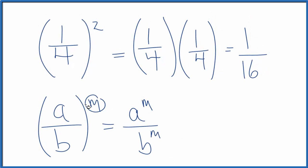That this m here applies to the a and the b. So up here, the two is going to apply to the one and the four. So we have one squared over four squared. One squared is one times one, that's just one. Four squared is sixteen, four times four.